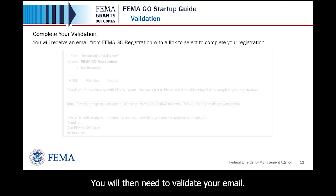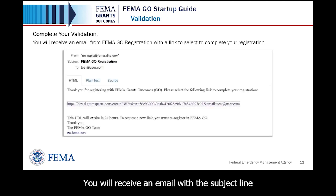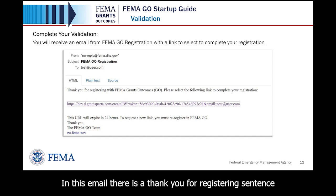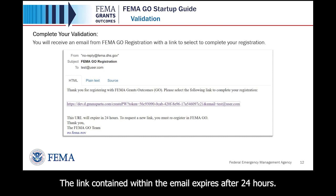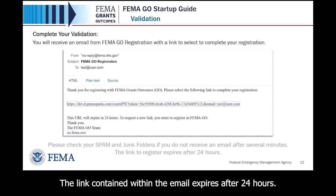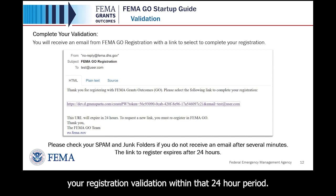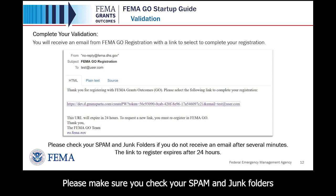You will then need to validate your email. You will receive an email with the subject line 'FEMA GO Registration' from noreply@fema.dhs.gov. The email contains a thank you for registering message and a link to complete your registration. The link expires after 24 hours, so please complete your registration validation within that 24-hour period. Please check your spam and junk folders if you do not receive the email after several minutes.